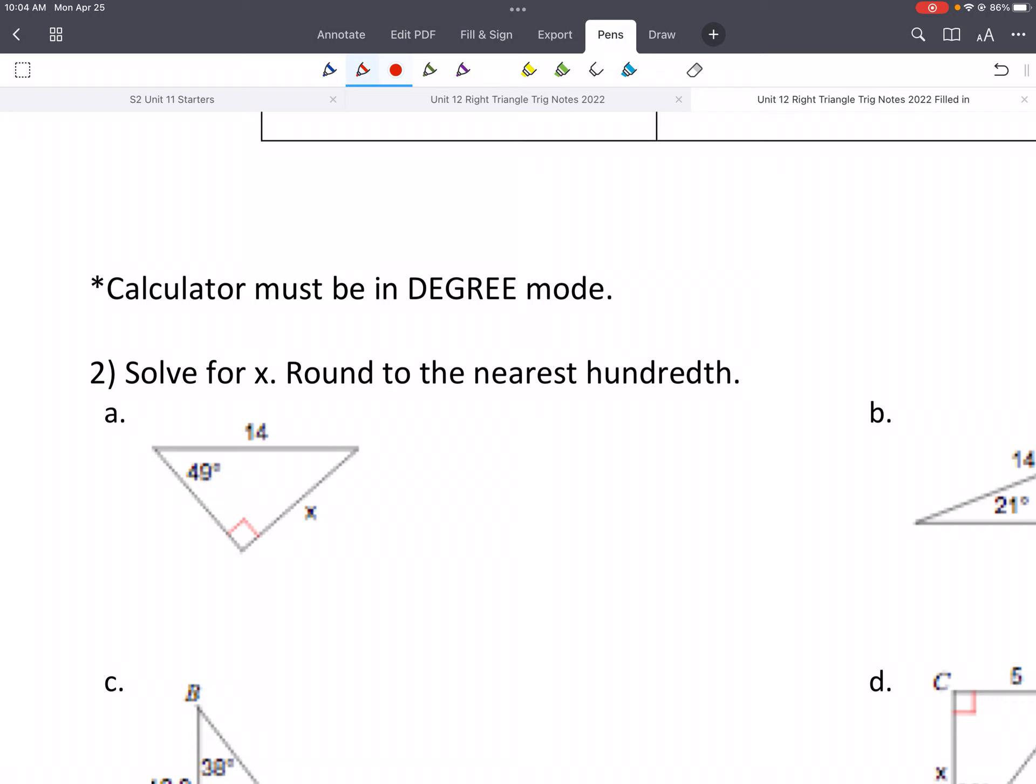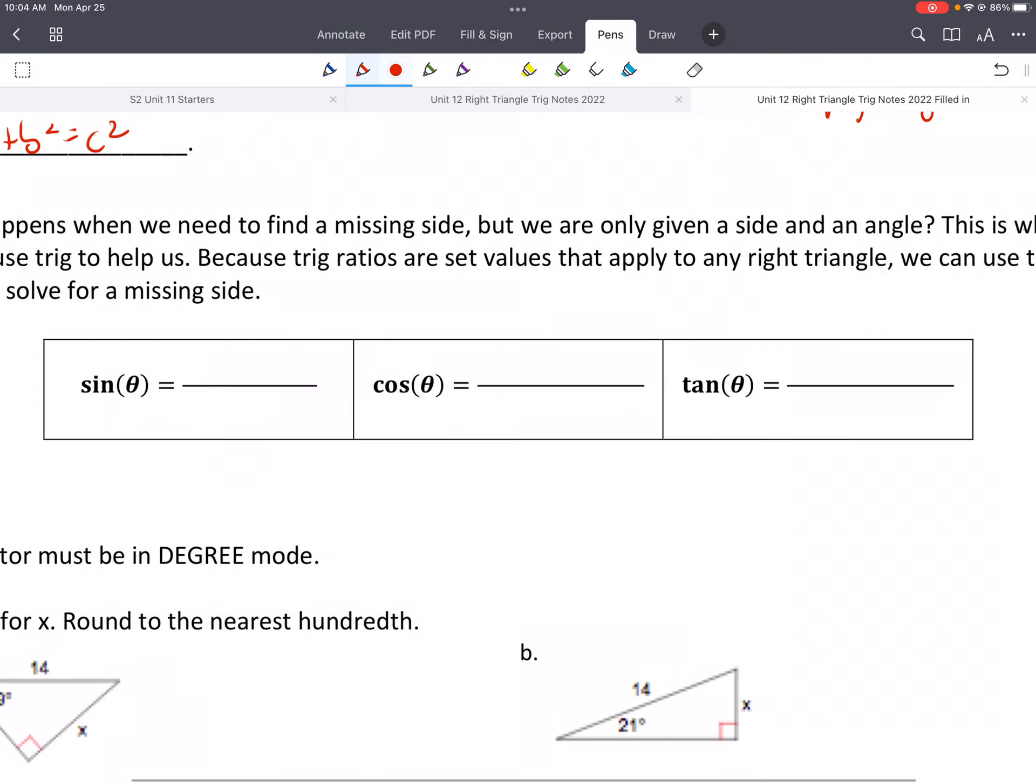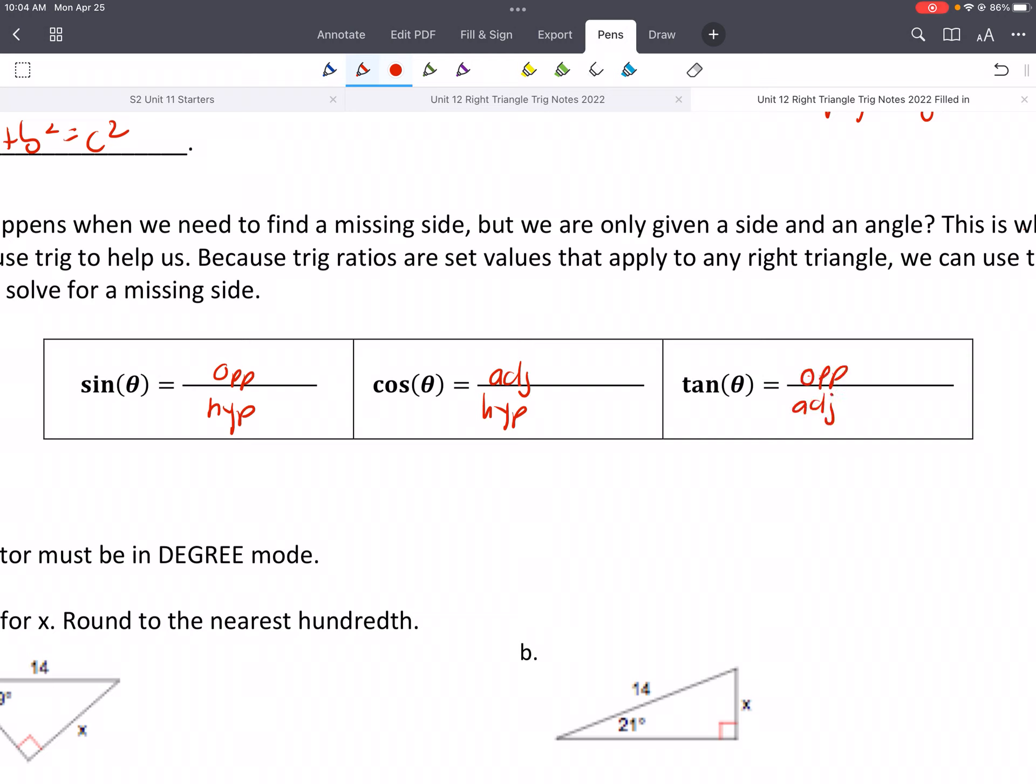If you're given a side and the reference angle, so like for a here, the reference angle is 49 degrees, then we can use trigonometry to find that missing side, what x is. So just a reminder, SOHCAHTOA, so sine is opposite over hypotenuse, cosine is adjacent over hypotenuse, and then tangent is opposite over adjacent.